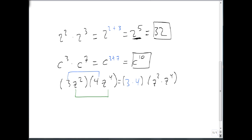Well, three times four, as we know, is just twelve, and z squared times z to the fourth is z to the two plus four, and two plus four is six, so our final answer is twelve z to the sixth.